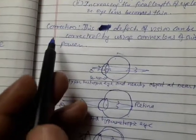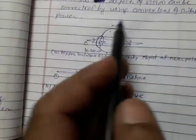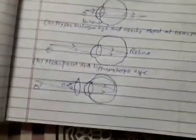Now, how can it be corrected? This defect of vision can be corrected by using convex lens of suitable power as prescribed by optician.